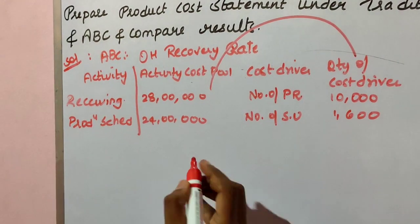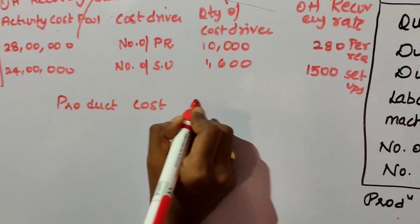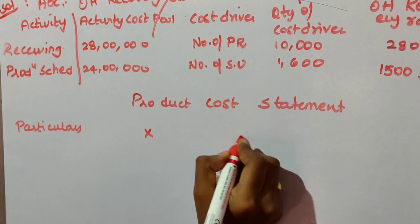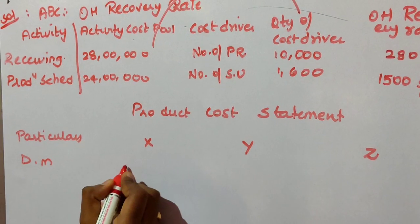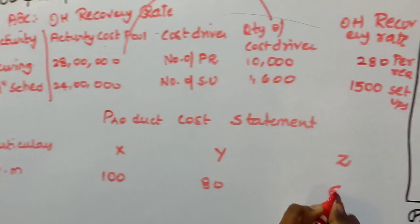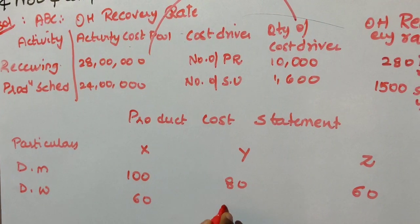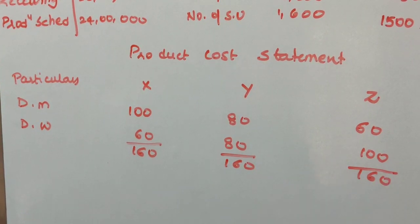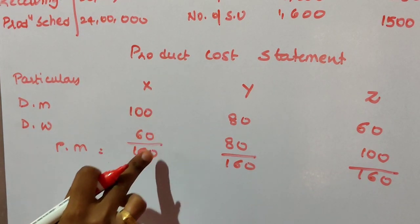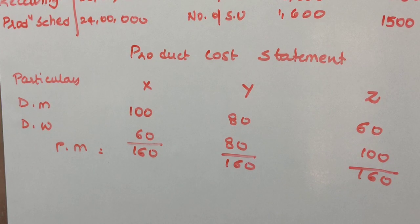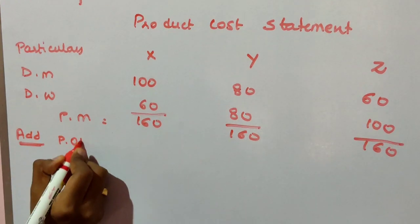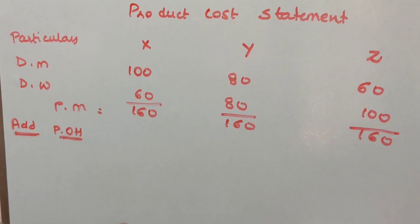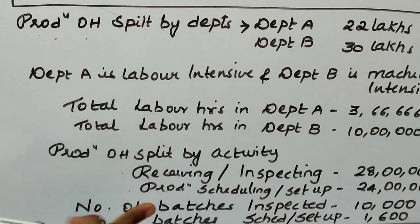Now we'll prepare the product cost statement using ABC. Direct material is ₹100, ₹80, and ₹60. Direct wages is ₹60, ₹80, and ₹100. Prime cost is therefore ₹160 for all three products. To this, we add production overhead based on the two activities: receiving and scheduling.